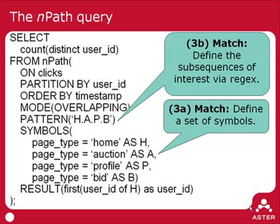Every time we match something of this pattern, we're going to compute some set of aggregates over the subsequence that we matched. In this case, we want to find the user ID. So every time we find a path of H, A, P, B, we look at that matched path and find out what user followed that path through the site. NPath here acts like a table — it outputs a single row for every time it matches this particular path, and that row contains a single column: user ID.